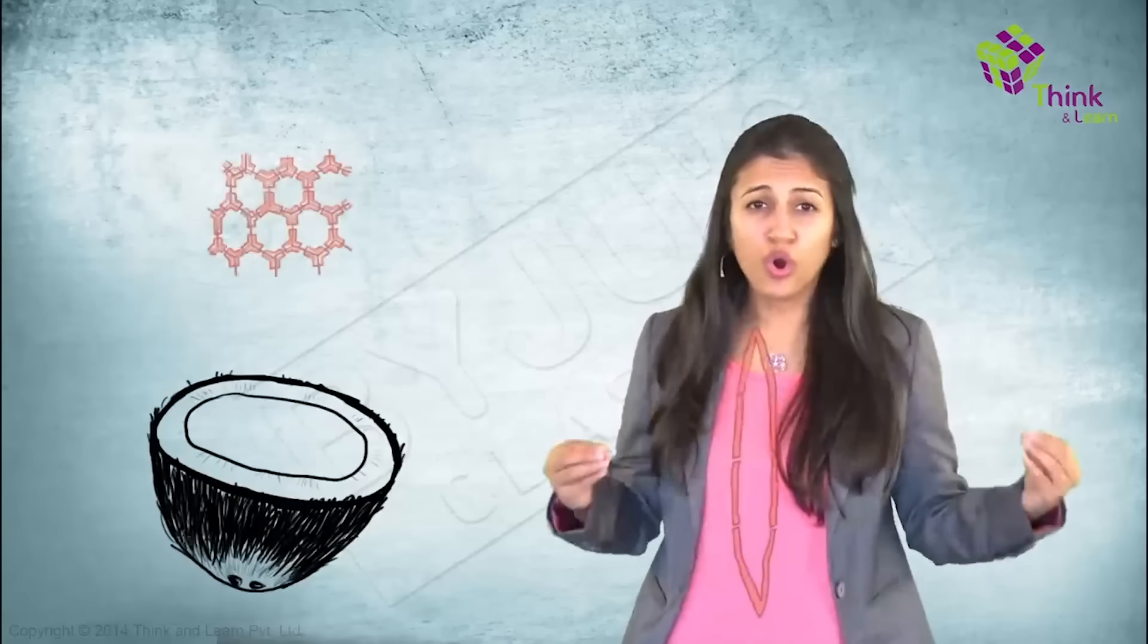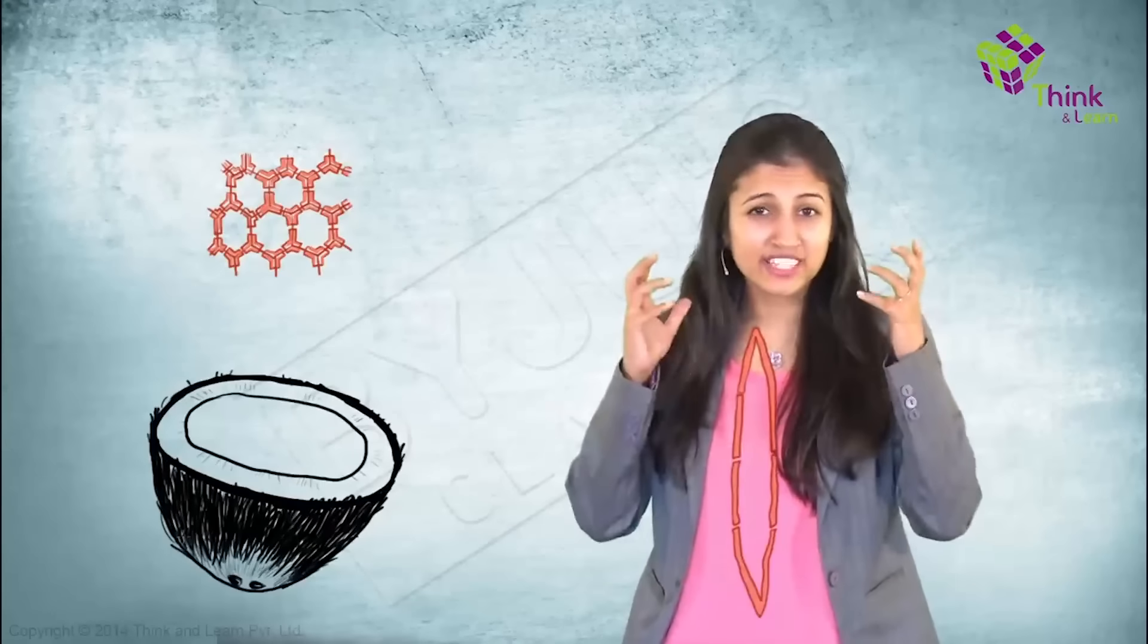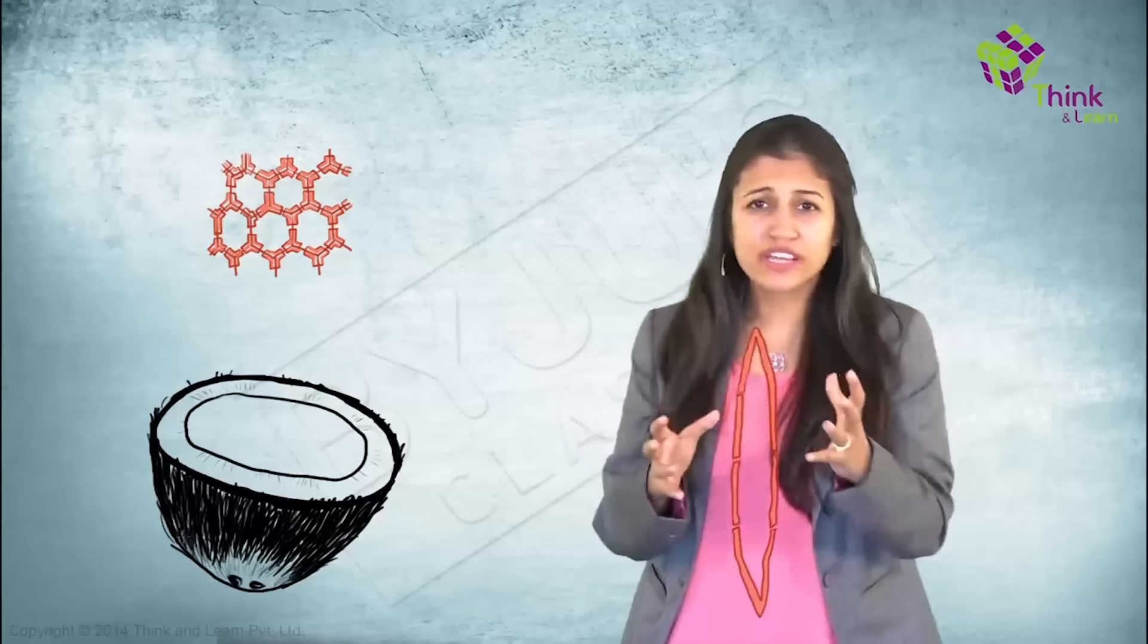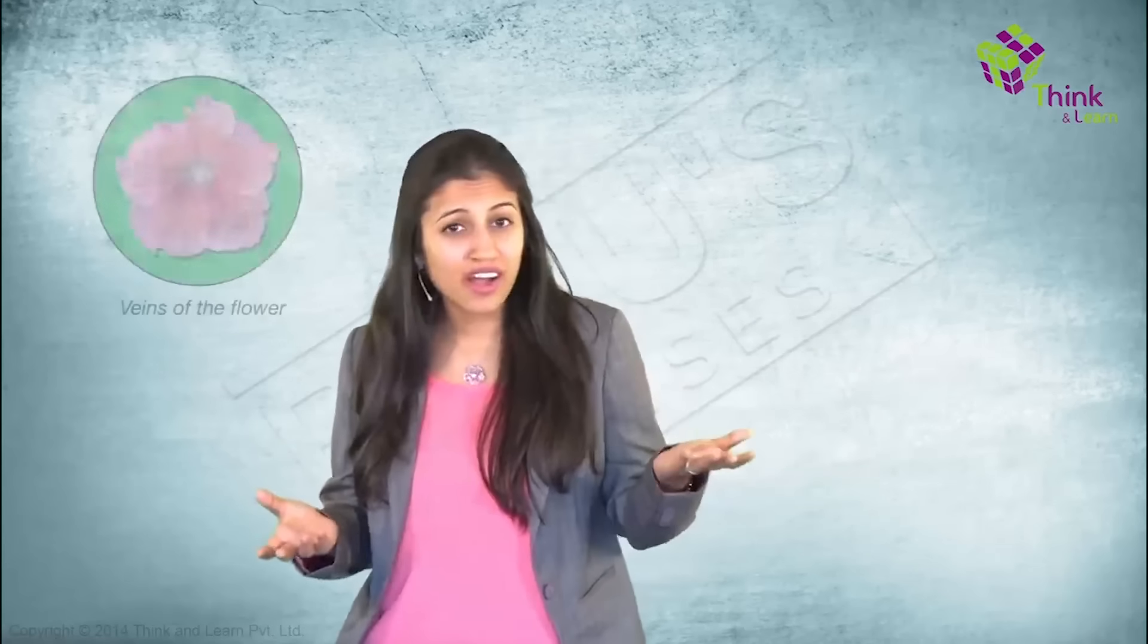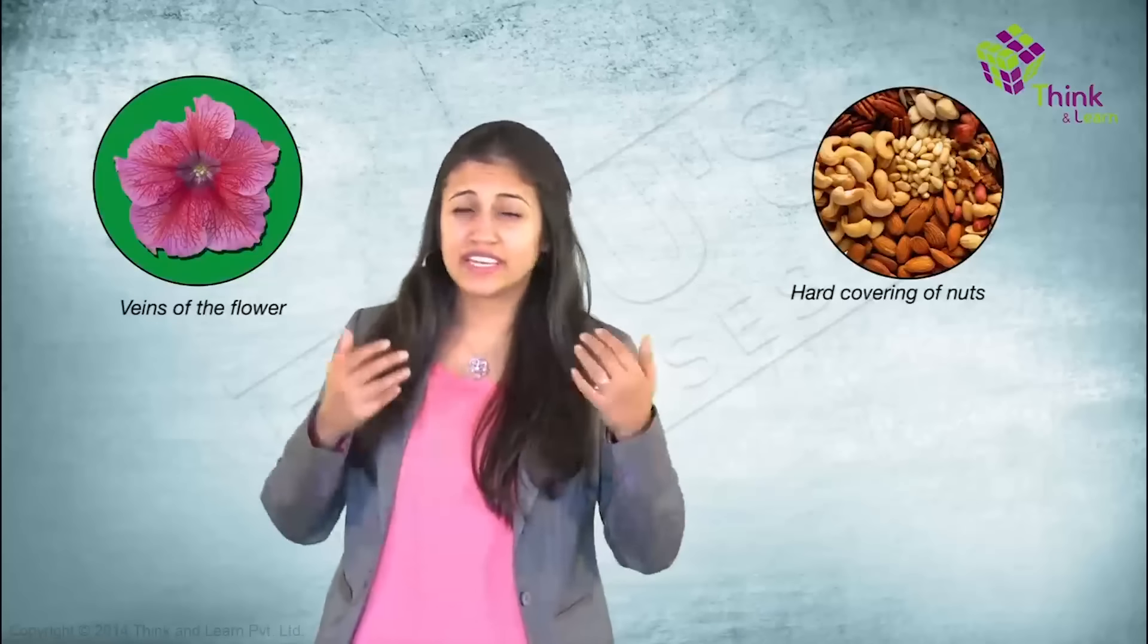The cells are narrow, long, with lignin-enriched thick walls. Walls are so thick that sometimes there is nothing inside the cell. Where else is it found? All the harder parts of the plant that you can think of. Veins of the flowers, covering of seeds, hard covering of seeds and nuts.